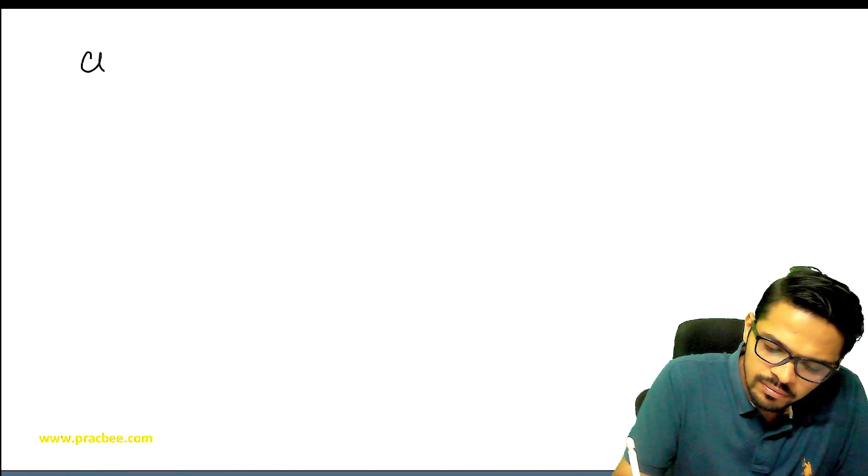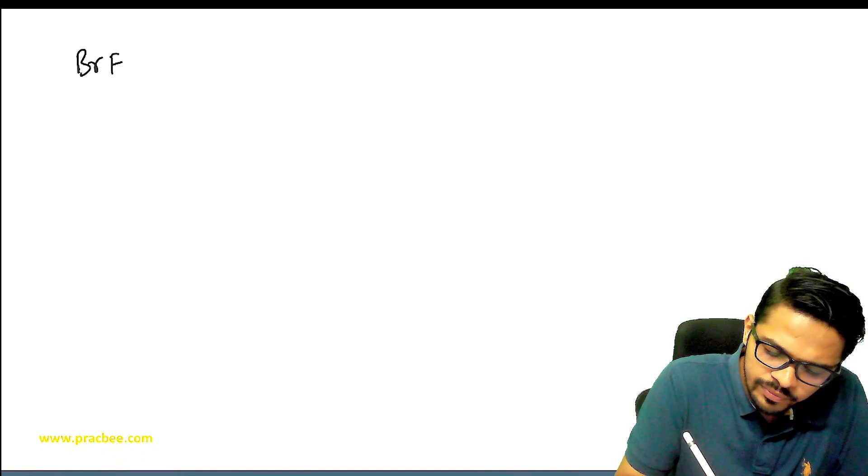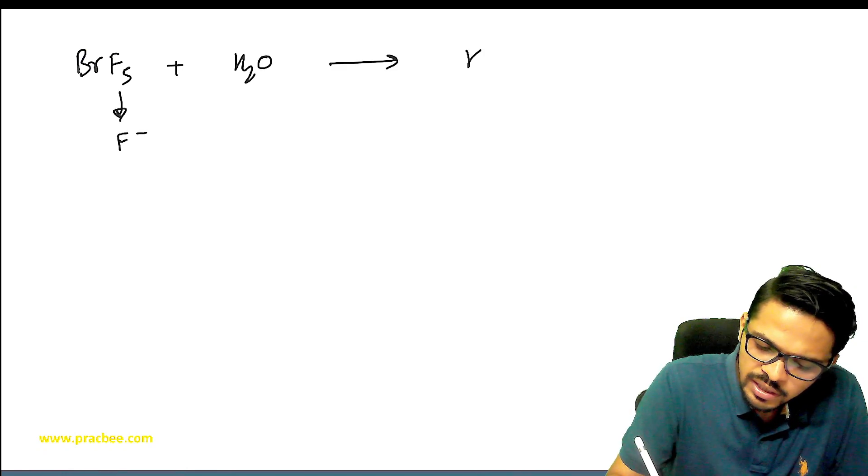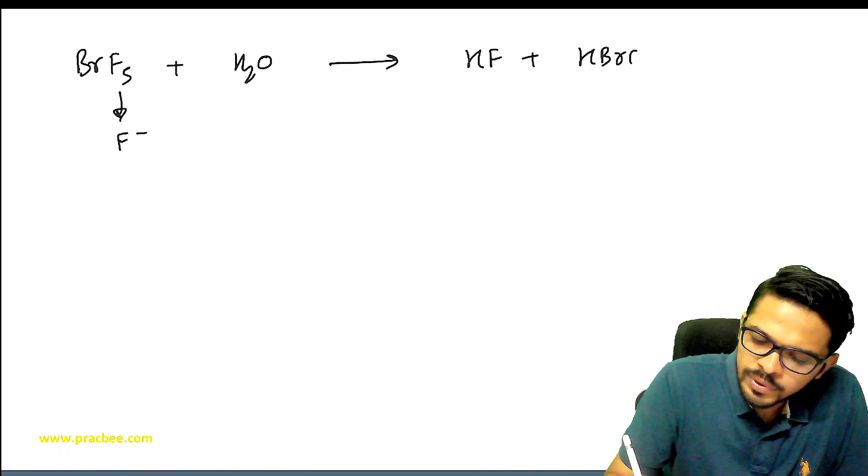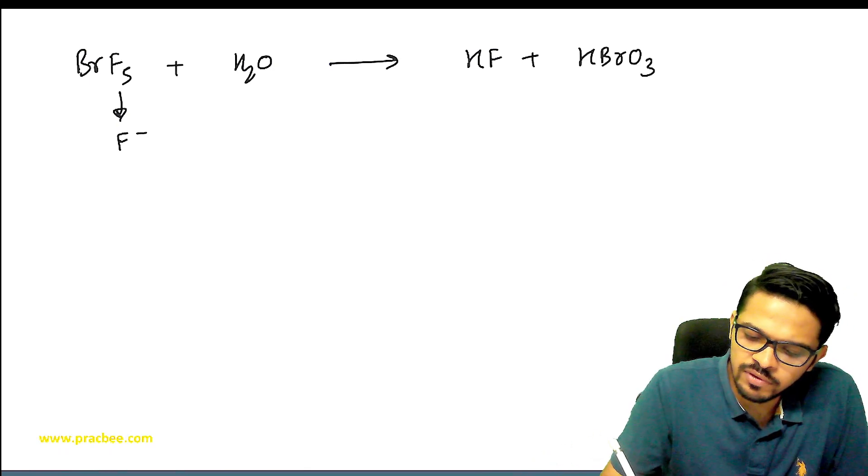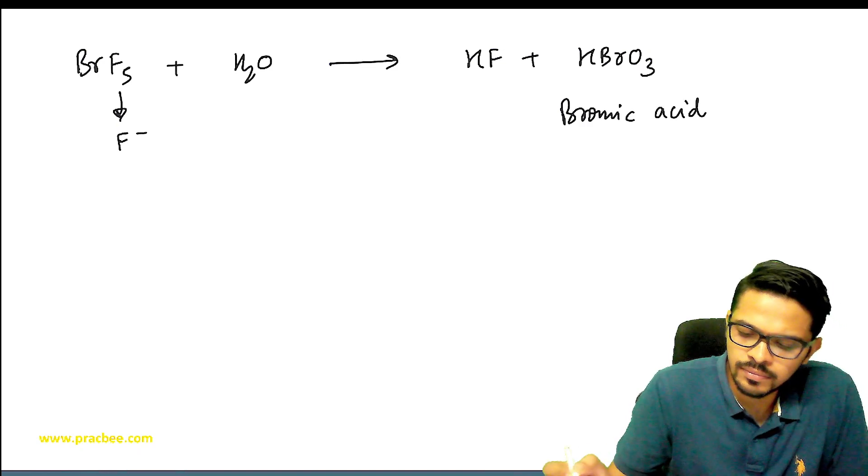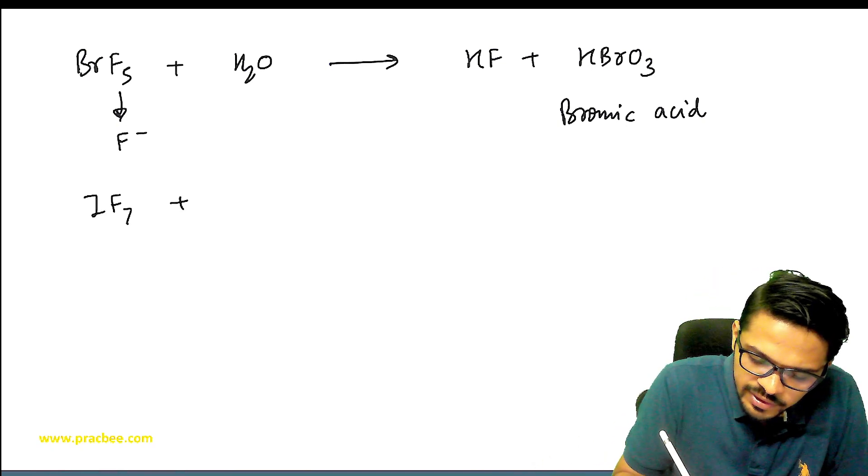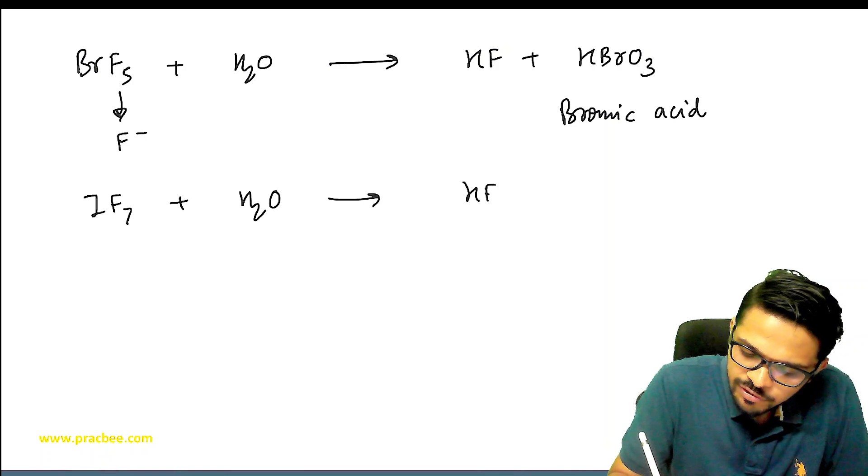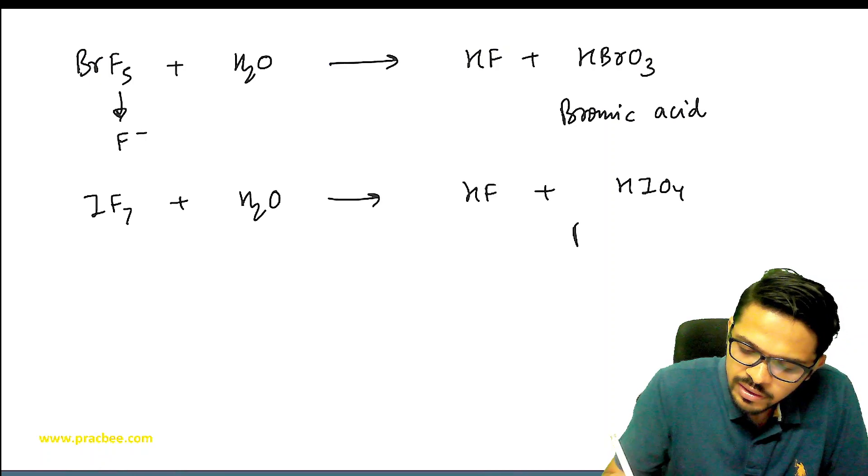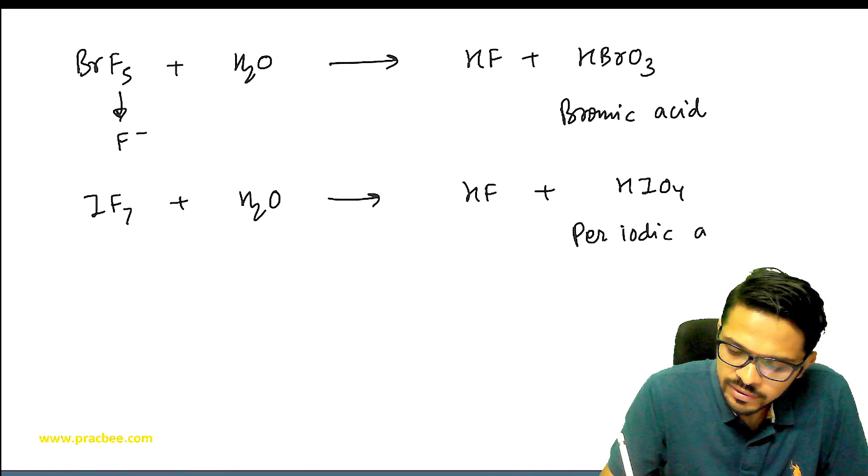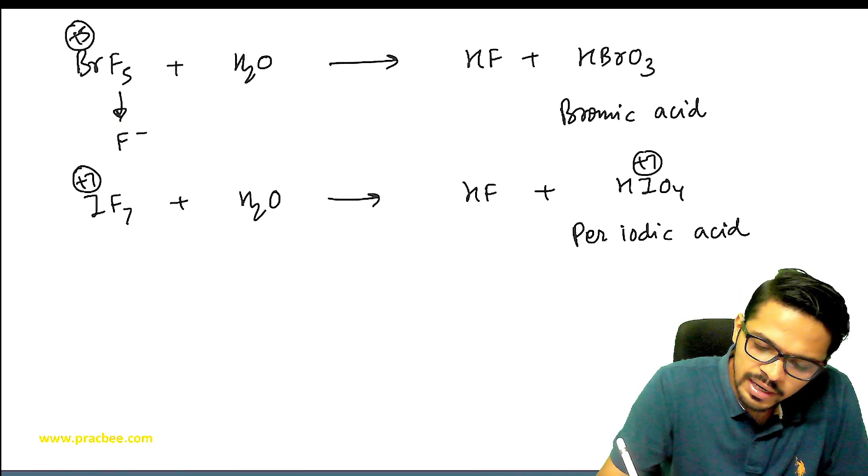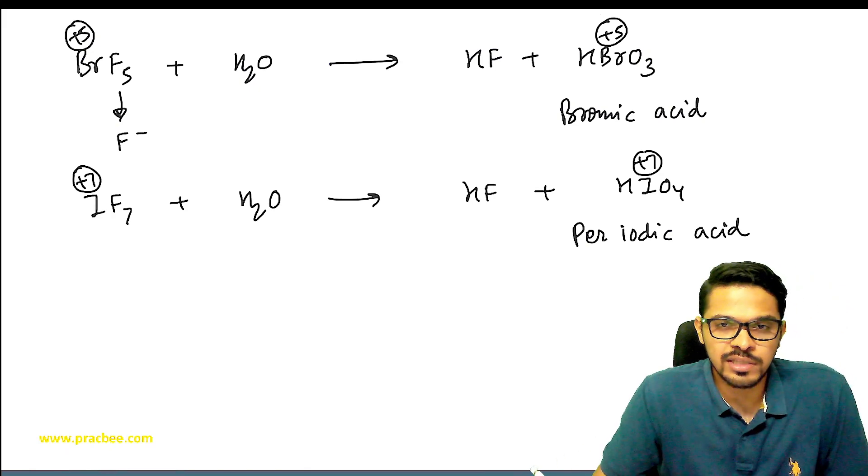Next, if I talk about BrF5, when we do its reaction with water, F- which is present will form HF, and with bromine will form HBrO3, which is called bromic acid. And finally, if I talk about IF7, hydrolysis will give HF and HIO4, which is periodic acid. So you are seeing oxidation state is remaining the same in the reactant as well as the product.